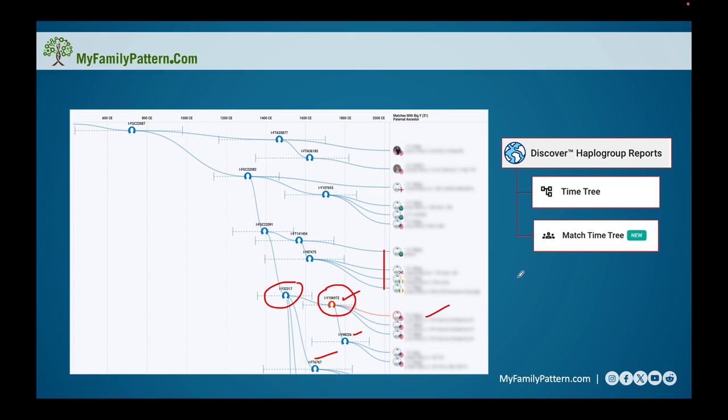So one of the things that I want to point out to you here as well is if you hover over any of these haplogroups, what's going to show up is a dialog box that shows you when your common ancestor, that is represented by the mutation that created this haplogroup, when they were approximately born.